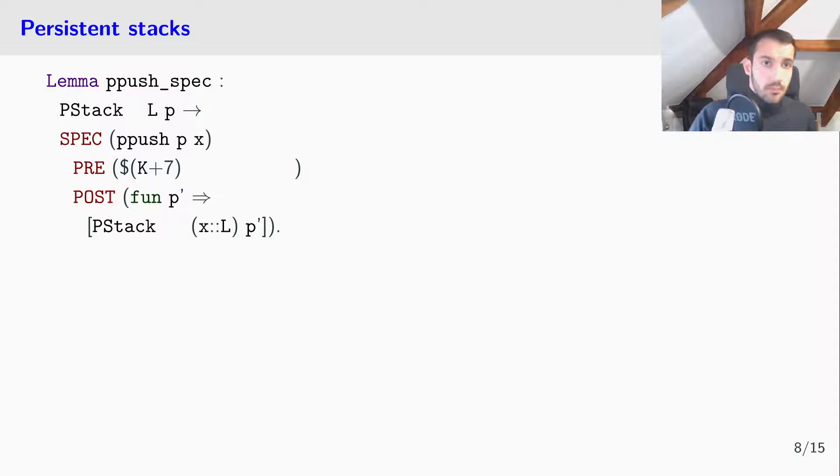But, as I said earlier, a persistent stack depends on a shared memory. Therefore, we annotate our representation predicate with the memory. But, notice that p-push will modify this memory. So, we existentially quantify over a new memory m-prime here, which extends the first one. And this extend predicate is important, because it specifies that p-push modifies monotonically the shared memory.